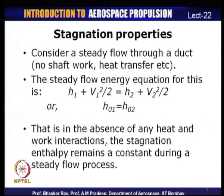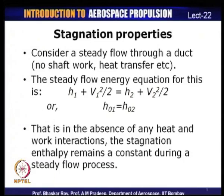Consider steady flow through a duct — a diffuser or nozzle — with no shaft work and no heat transfer. The steady flow energy equation gives H₁ + V₁²/2 = H₂ + V₂²/2. The left-hand side is stagnation enthalpy at state 1 (H₀₁) and the right-hand side is stagnation enthalpy at state 2 (H₀₂).